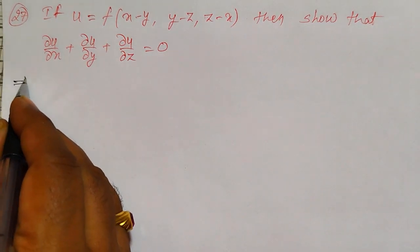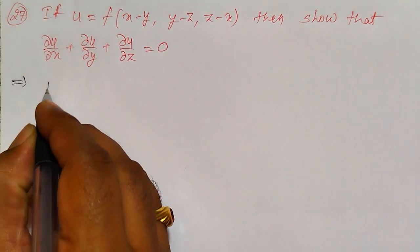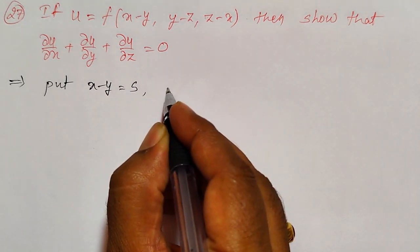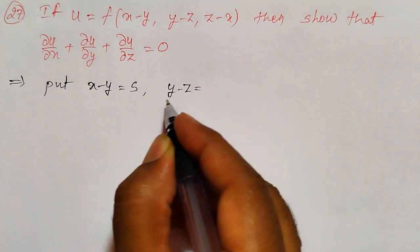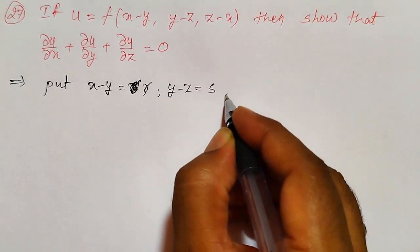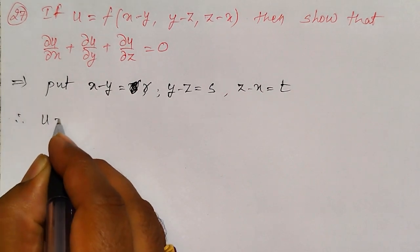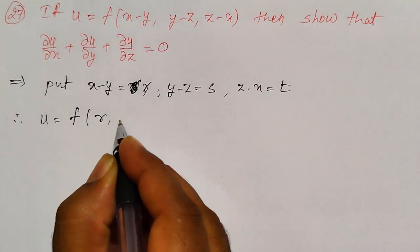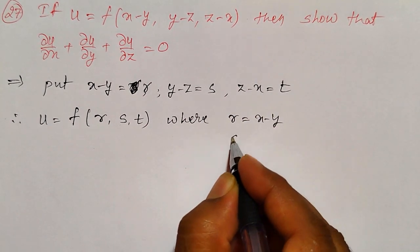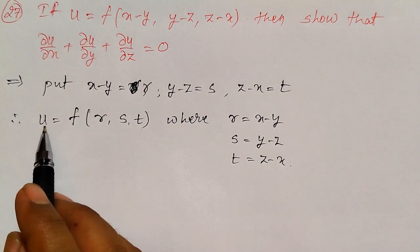To solve this, I have to convert the given function u = f(...) into a composite function type by substituting. Let us put x minus y equal to r, y minus z equal to s, and z minus x equal to t. Then the given function u can be written as f(r, s, t), where r = x-y, s = y-z, and t = z-x.